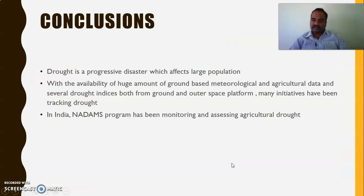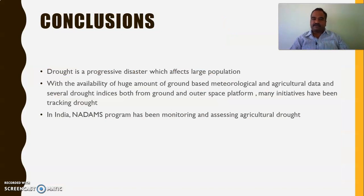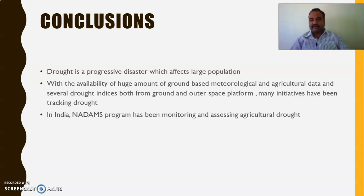I hope you have understood the role of NADAMS — how they use satellite images to understand vegetation and provide assessments. In conclusion, drought is a progressive disaster that will surely affect a large number of people and will have economic, social, and environmental impacts. With the availability of ground-based meteorological and agricultural data and several drought indices from both ground and space platforms — like NDVI — many initiatives have been tracking drought in the recent past, and in our country particularly, the NADAMS program has been monitoring and assessing agricultural drought.